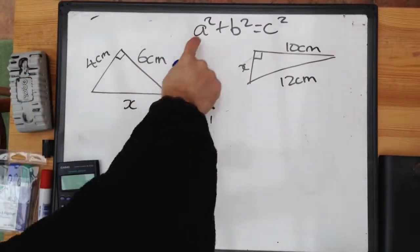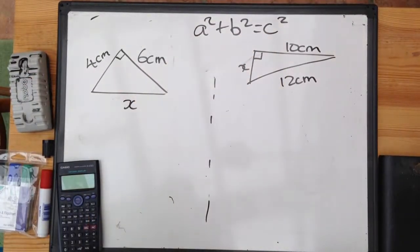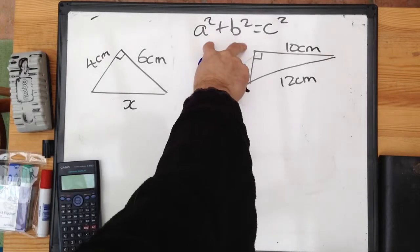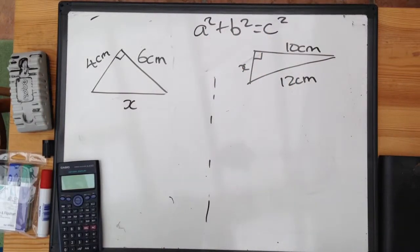Okay, Pythagoras' Theorem. A squared plus B squared equals C squared. The sum of the squares on the two short sides is equal to the square on the longer side, or the hypotenuse.